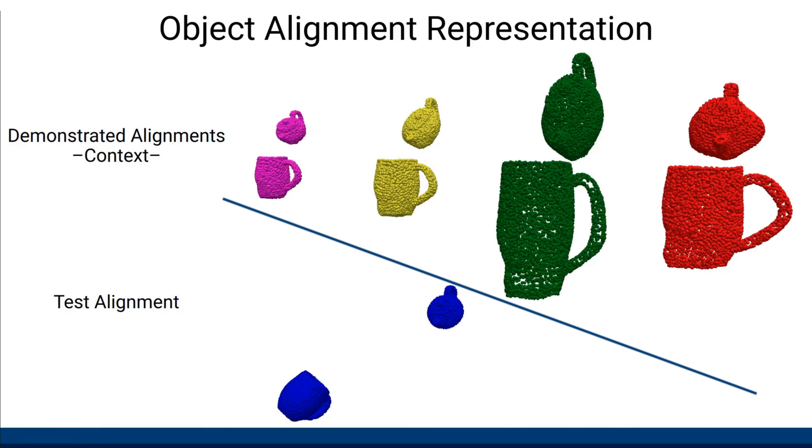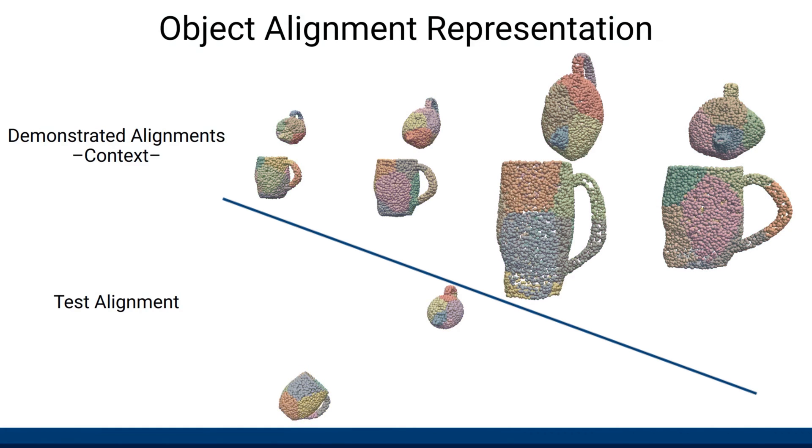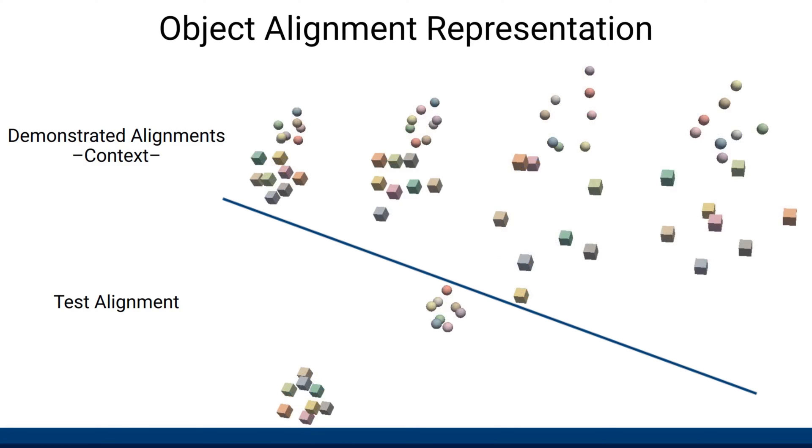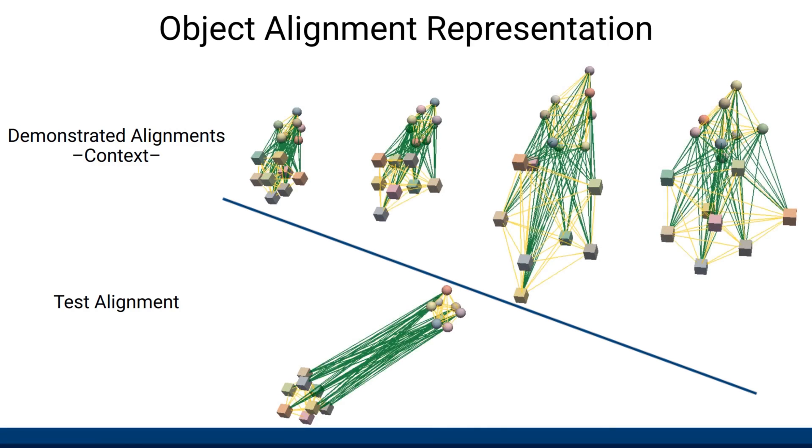In this work we use noisy point clouds to build a heterogeneous graph representing the alignment between the objects. First we divide the objects into separate parts and encode them using a learned module, generating nodes representing local object geometries. Connecting these nodes with edges that represent relative positions yields graph representation capturing both object geometries and relative alignment between them.